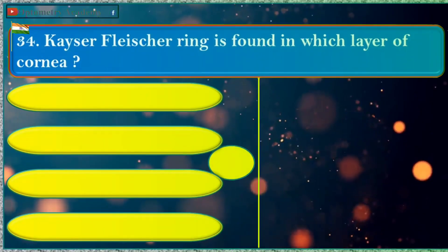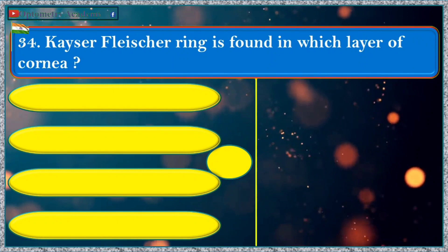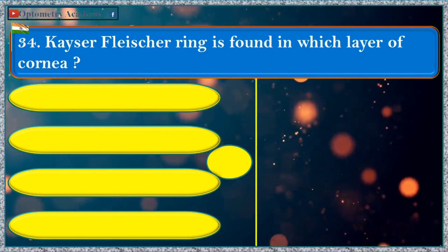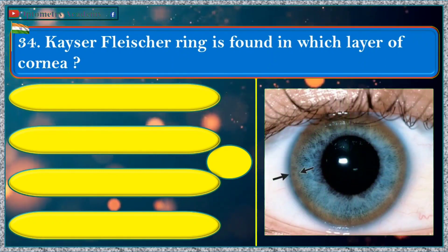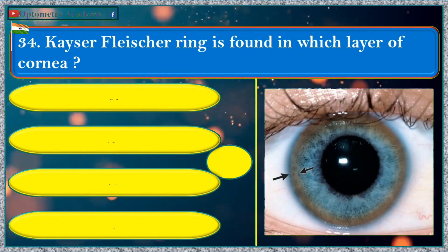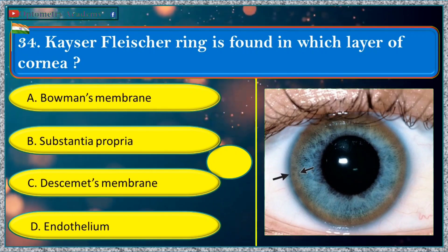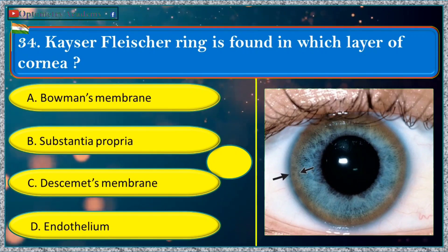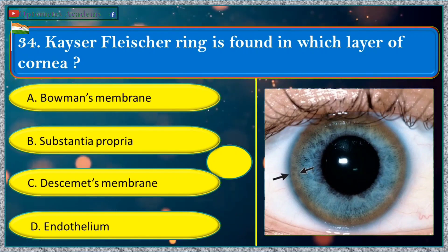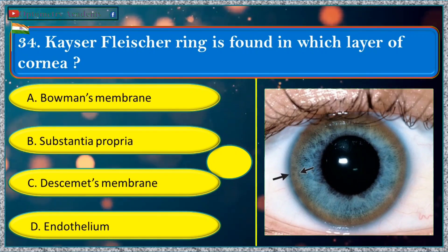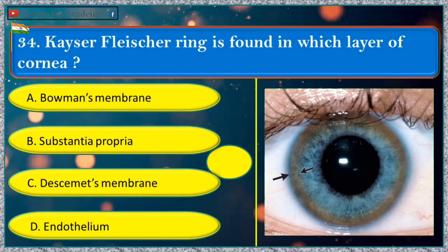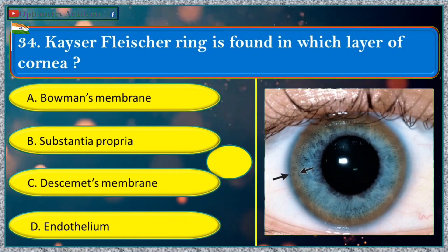Kayser-Fleischer ring is found in which layer of the cornea? a. Bowman's membrane, b. substantia propria, c. Descemet's membrane, d. endothelium.